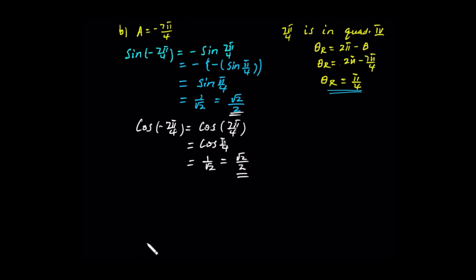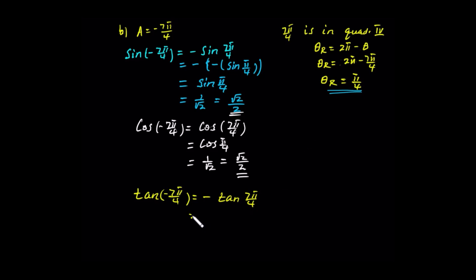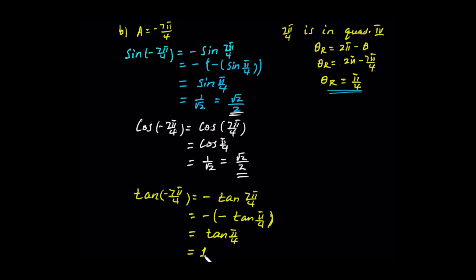Tangent of negative 7π/4 is the same as tangent of positive 7π/4. The reference angle is π/4, in the fourth quadrant where tangent is negative. Negative times negative gives positive tan(π/4), which equals 1.